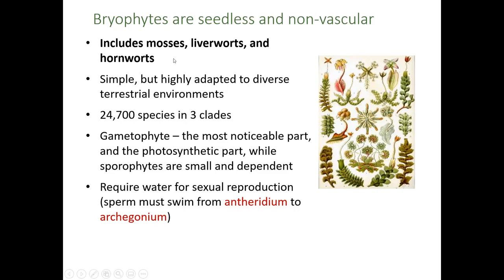Now we're going to look at the first group of land plants — these are the first to evolve and the first to live on land. The clade name is called the bryophytes. The bryophytes are seedless and they're non-vascular. They do have the alternation of generations life cycle, which all land plants have, but these don't have seeds and they don't have vascular tissue. Because they don't have vascular tissue, they cannot move water around inside their body.